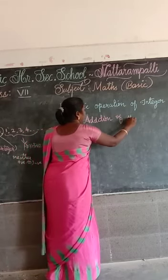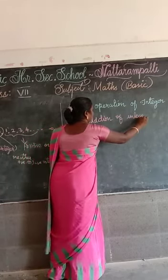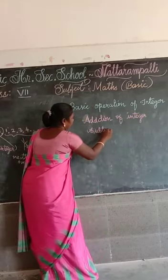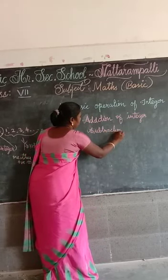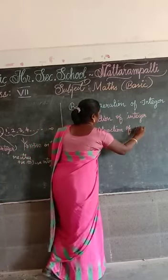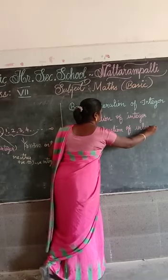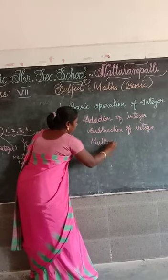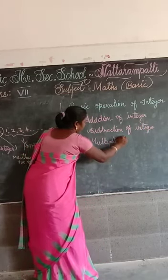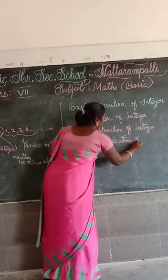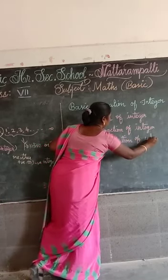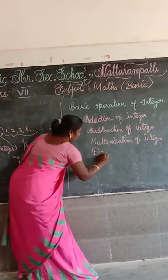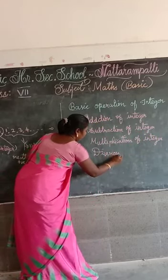First one: addition of integers. Second one: subtraction of integers. Third one: multiplication of integers. Fourth one: division of integers.